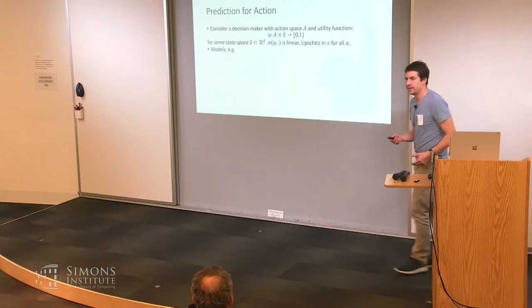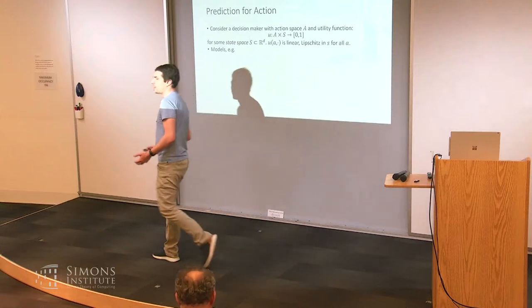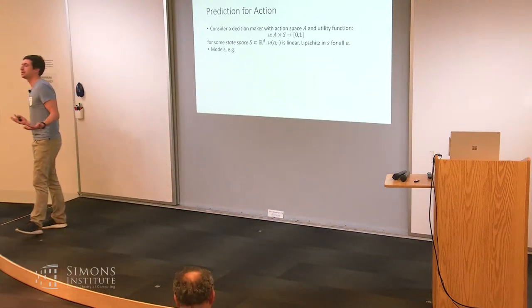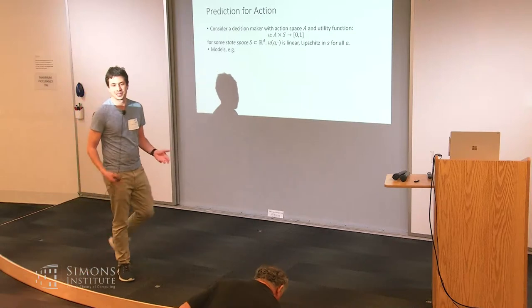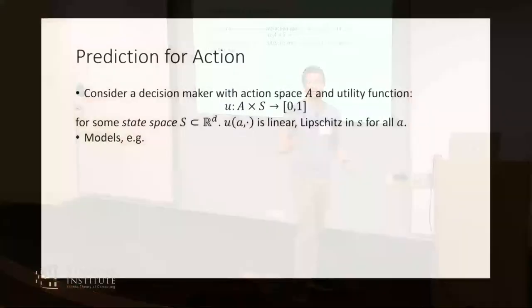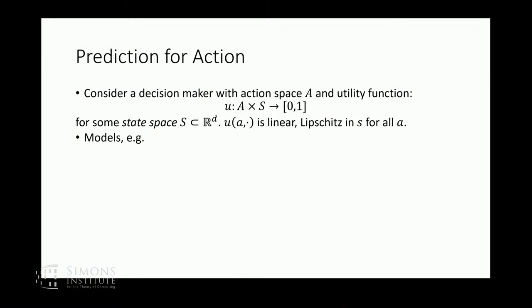I want to think about a basic question: when is it a good idea for a decision maker who wants to maximize their utility to act as if predictions about the future are correct? And when should they do something more complicated? To formalize that, here's a simple model. I've got a decision maker with some set of actions, and the other relevant thing is some states, which I'll think of as a vector. This could be something exogenous, or it could be some aggregation of what other players have done — so this could be a utility function in a game.